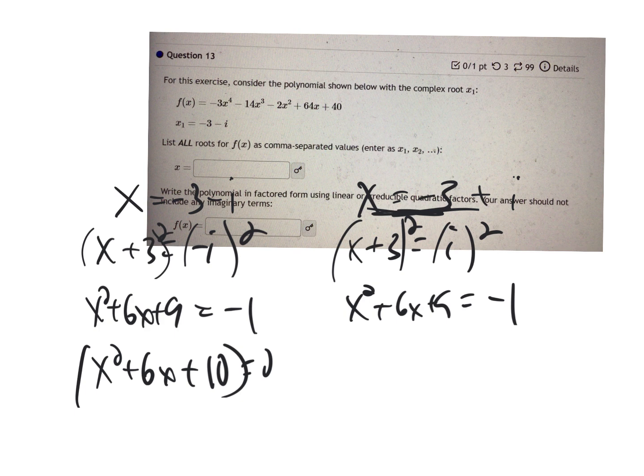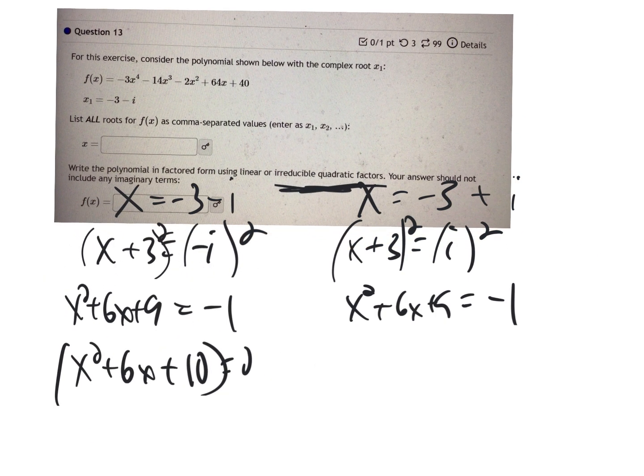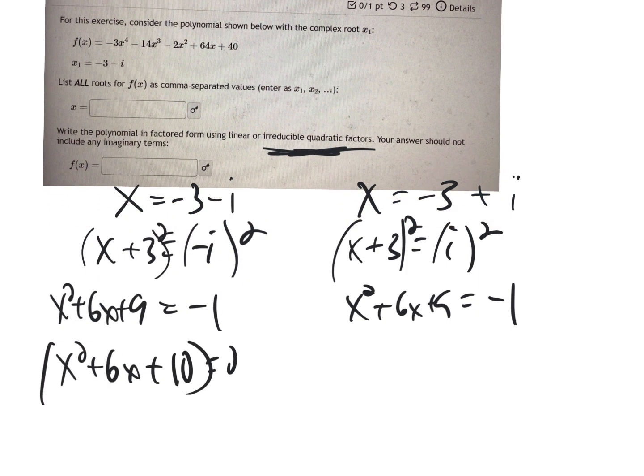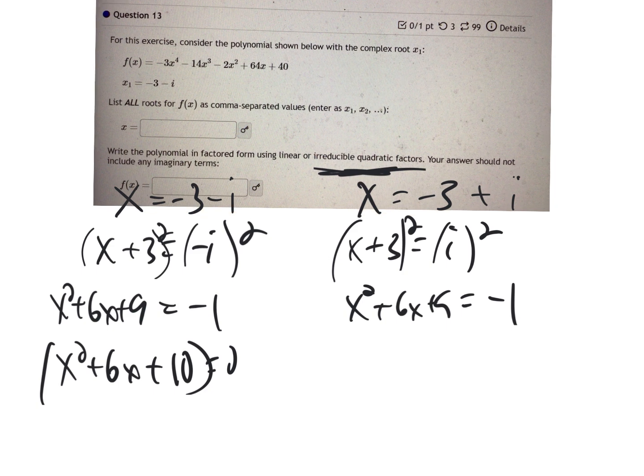So all we're going to have to do is we're going to do long division, put this through a long division problem into this polynomial. We'll get a quadratic that'll come out with it. And maybe it'll give us, chances are we're going to have to use a quadratic formula, but maybe not. We'll have to see what happens. Here, let me move some stuff up.